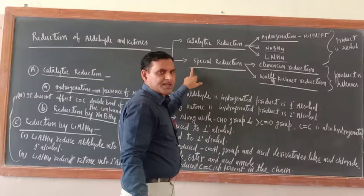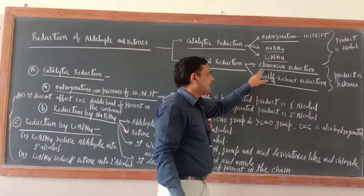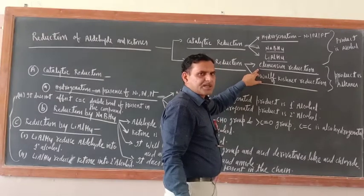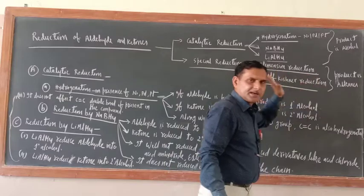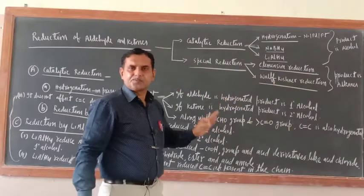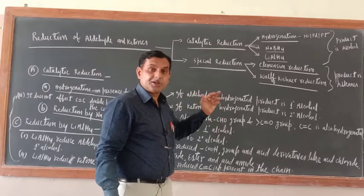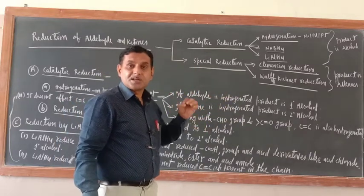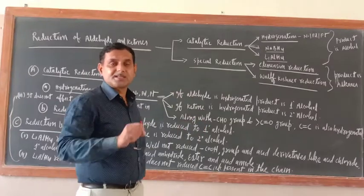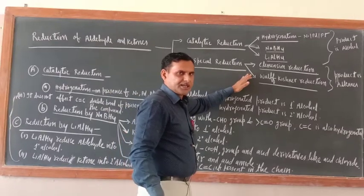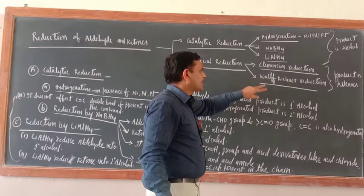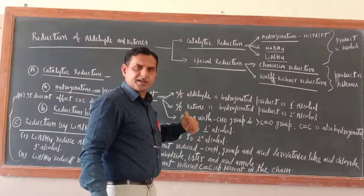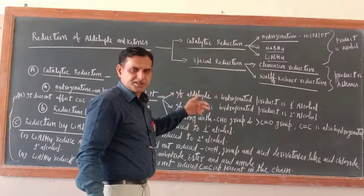The second category is special reduction. Under special reduction there are two name reactions: Clemmensen reduction and Wolff-Kishner reduction. When aldehydes and ketones are subjected to these reductions the product is alkane. So catalytic reduction product is primary or secondary alcohol, while special reduction product is alkane.